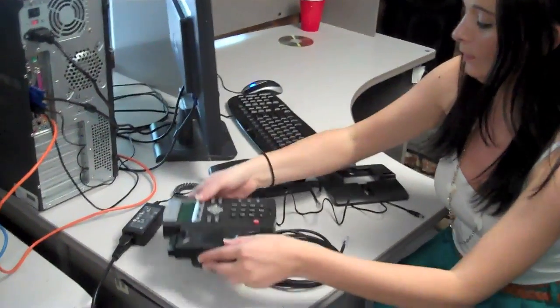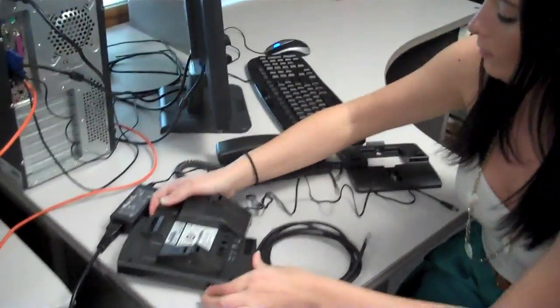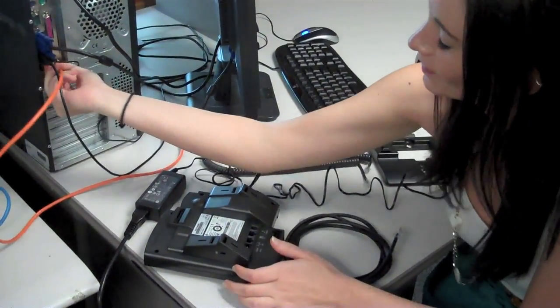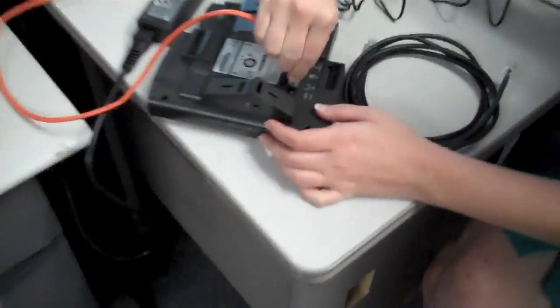The first step is to unplug the network cable from your computer and to connect it to the phone. This illustration here has the computer a little bit closer. You might need to get up under your desk.